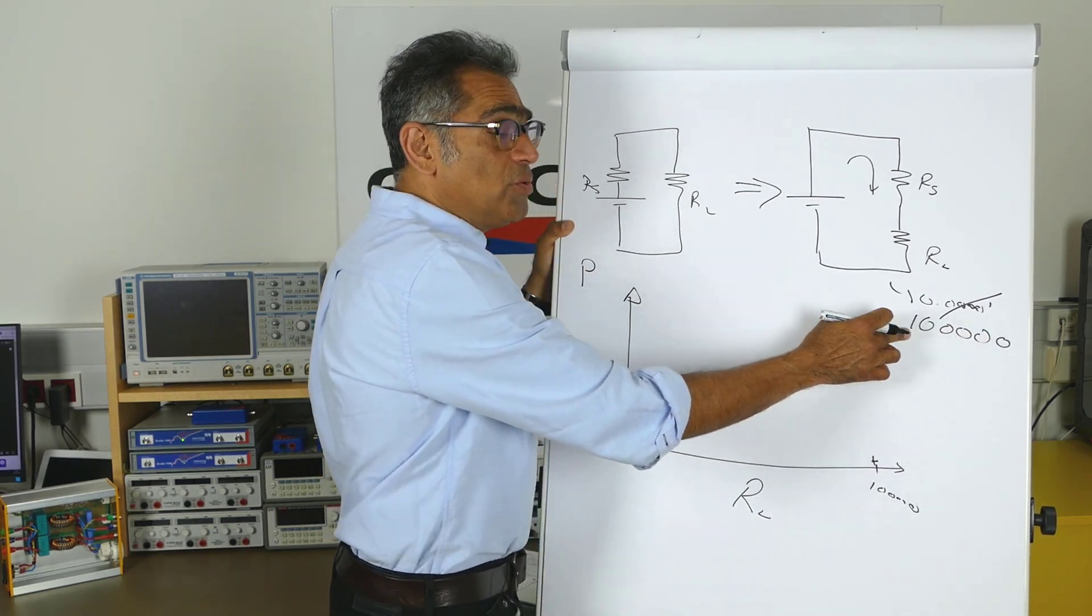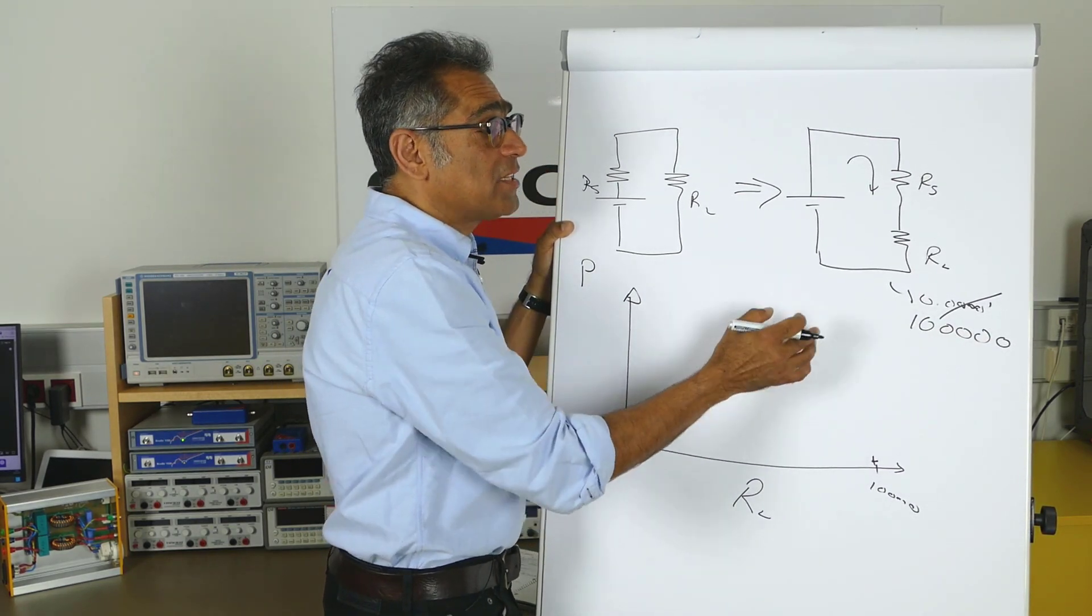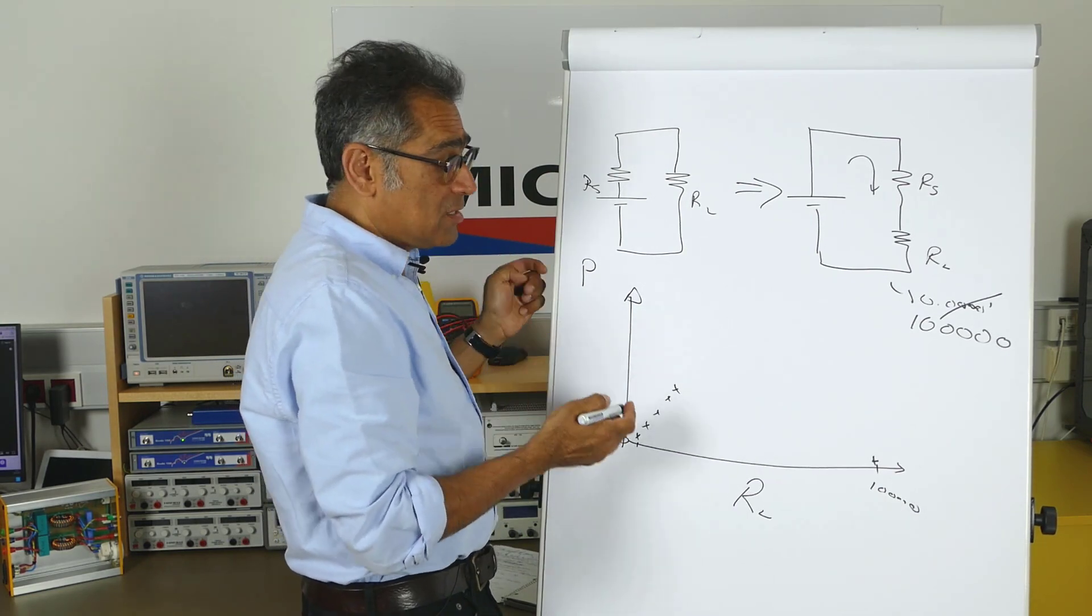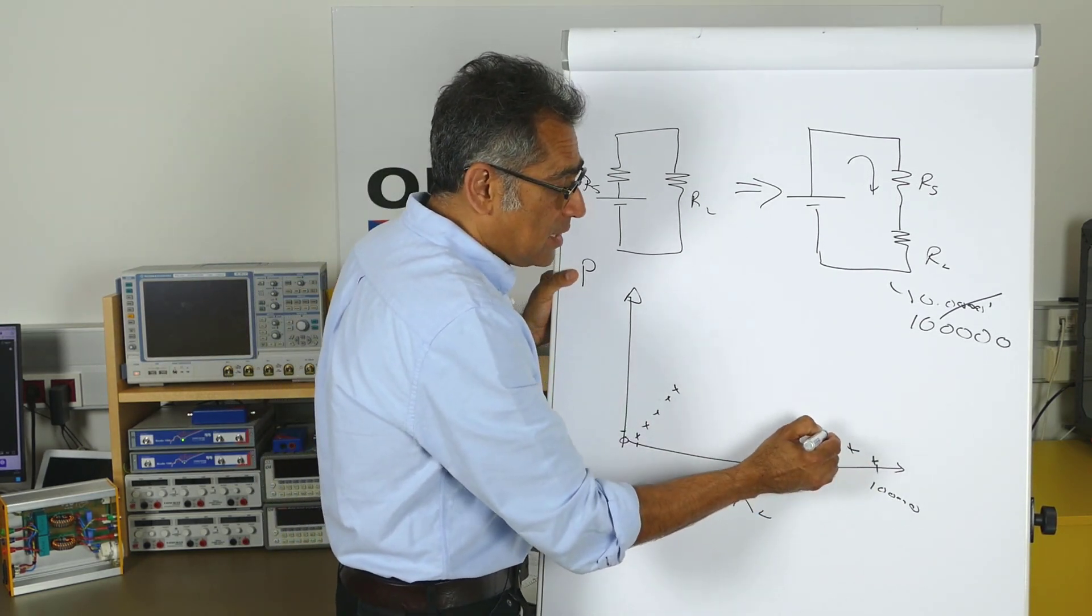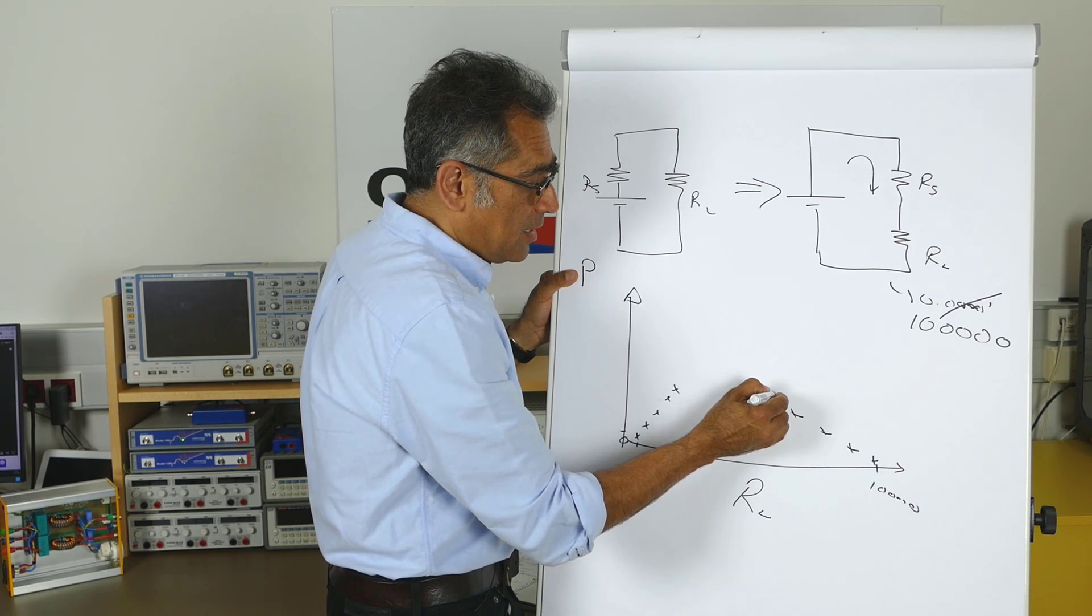Now as I reduce this value of RL, the amount of current is going to increase, and therefore the power is going to increase. So it will get something like this.